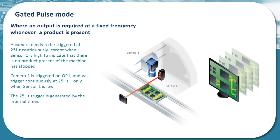Gated pulse is another mode option within the CC320, and this is used where an application requires an output at a fixed frequency, but only when an inspected product is present. In the illustrated example, whenever sensor 1 is low, this indicates that there is a product present, at which point a 25 Hz output pulse is generated to the camera for as long as that product remains present. The 25 Hz trigger is generated by the CC320's internal timer.